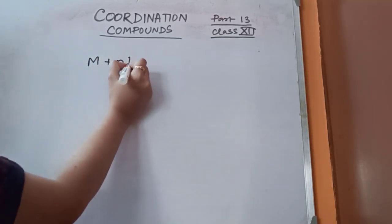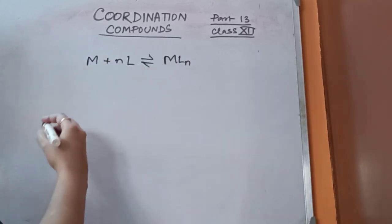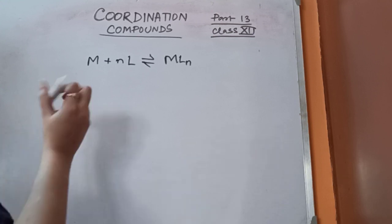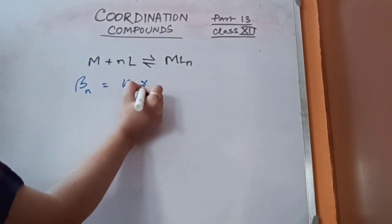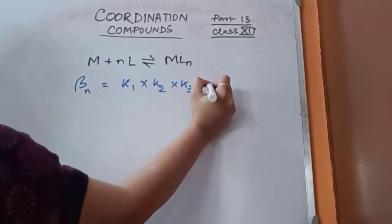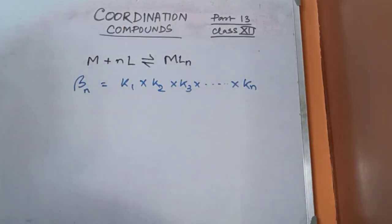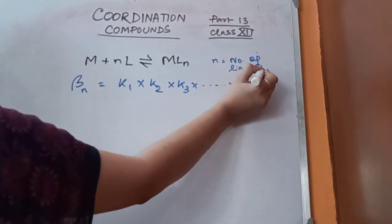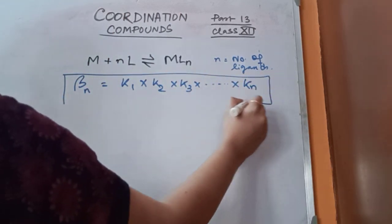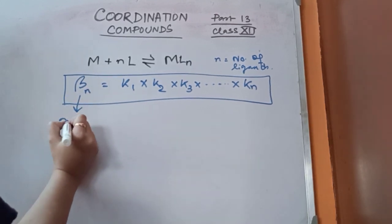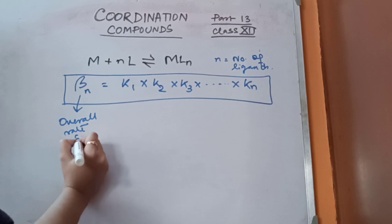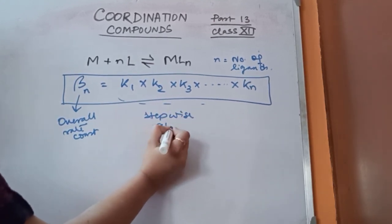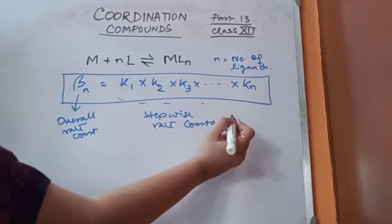For a general complex M + nL → MLₙ, the overall stability constant beta_n = K₁ × K₂ × K₃ × ... × Kₙ, where N is the number of ligands. This is the general relationship between the overall stability constant beta_n and the stepwise stability constants K₁ through Kₙ.